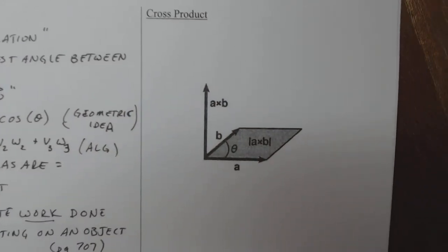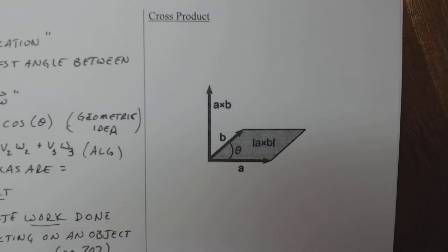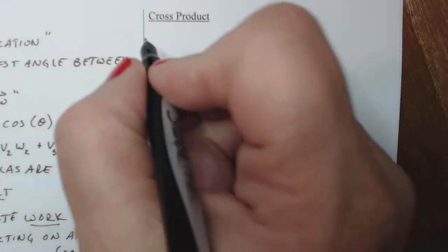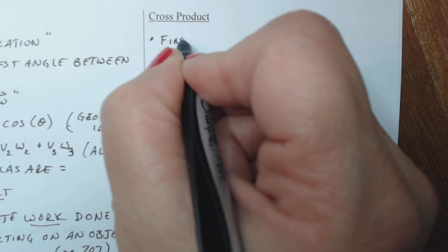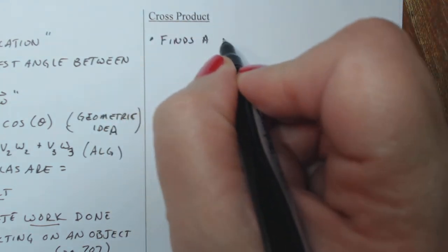So let's talk about how the cross product works and what results we can expect from it. So the cross product, or what does it do? It finds, this is really cool, a vector perpendicular to both vectors.